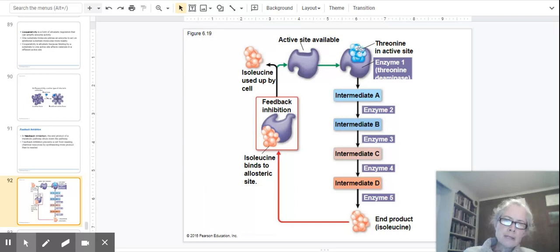In purple is our enzyme that catalyzes the first reaction. Here you have that first reaction: threonine is the substrate for that reaction, it becomes intermediate A and is catalyzed to become B to C to D, and finally after five enzymes later we have the catalyzed product of this pathway which is isoleucine. Here is where feedback inhibition plays a role: isoleucine binds to the enzyme that is the first enzyme in this pathway.